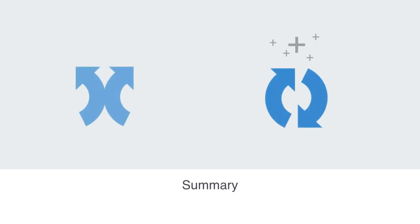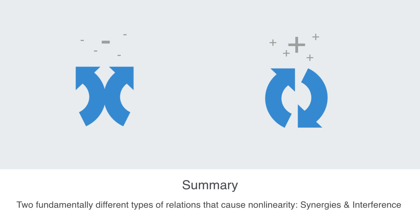In this section, we have discussed the two fundamentally different types of relations that give rise to super or sub-linear phenomena, either due to the positive effects that emerge out of synergies or to the deleterious effects that emerge from interference.